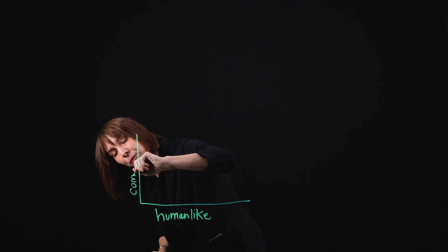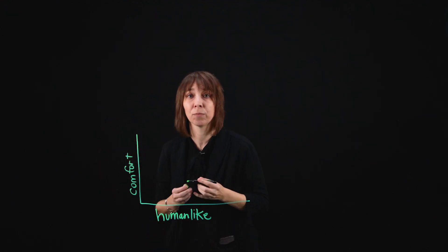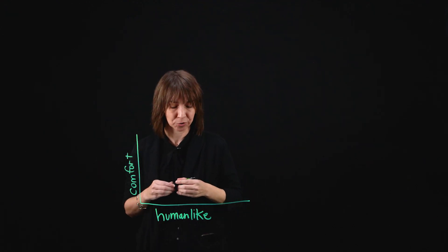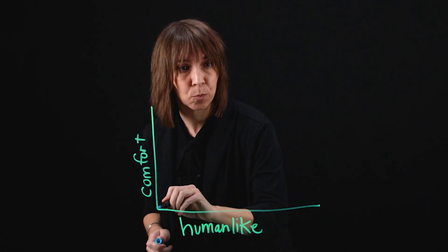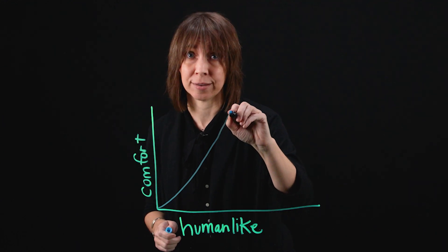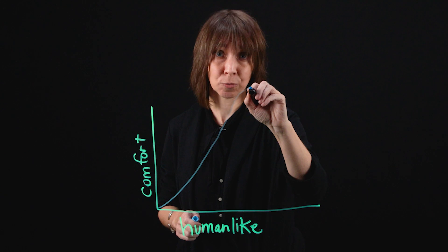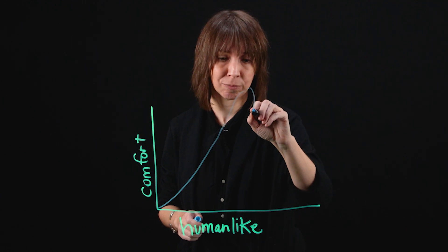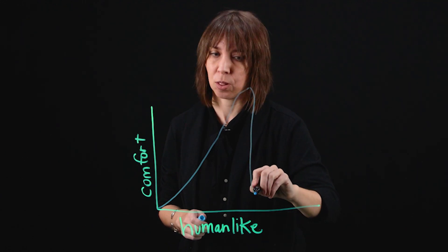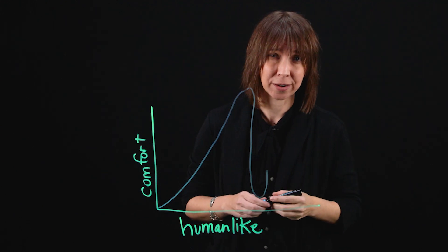The theory has been applied to robots, AI, dolls, and game characters. As the entity becomes more human-like, user comfort increases until the point when the entity resembles a human, but is clearly still not human. This is when feelings of discomfort and eeriness can arise.